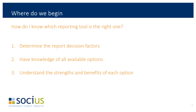So where do we begin? When I get a request for a tool, the first thing I need to do is figure out — there are all these tools that work with GP or any ERP system — what tool do I need to use? Sometimes it can be overwhelming. So we've narrowed down a little process: first, determine your decision factors; then, with knowledge of all available options, make a better decision by applying the strengths of each tool to those decision factors.